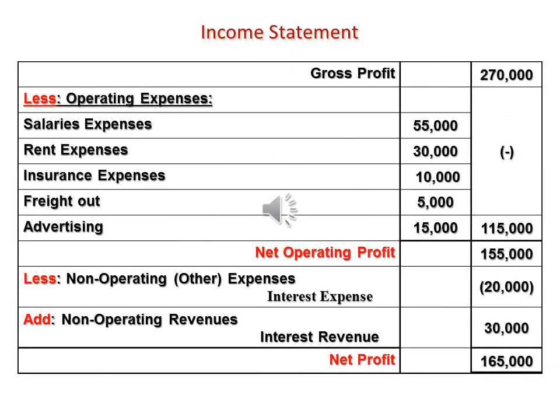The second step ends at net profit. Beginning with gross profit of $270,000, less operating expenses — salary expenses, rent expenses, insurance expenses, freight out, and advertising. Total operating expenses subtracted from gross profit gives net operating profit of $155,000. Less non-operating or other expenses of $20,000, add non-operating revenues — interest revenue of $30,000 — for a net profit of $165,000.